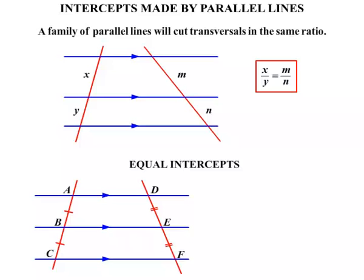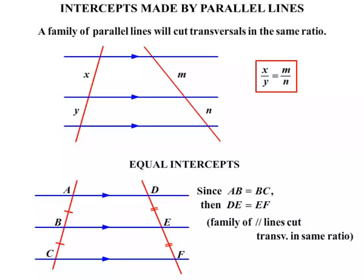In a way of saying that, let's bring some letters in, some points there. We could say that since AB equals BC, they were the first two intervals we marked, then as a result DE equals EF. And the reason: family of parallel lines cut transversals in the same ratio. So that's how we'd write that reason.